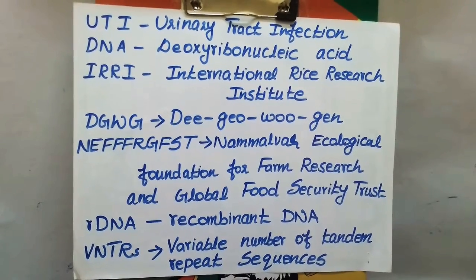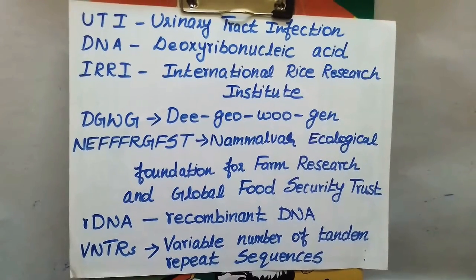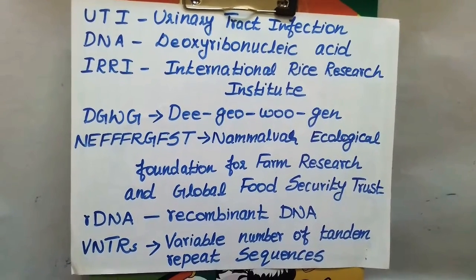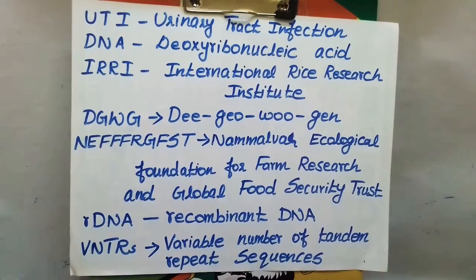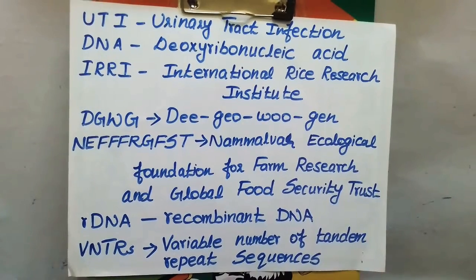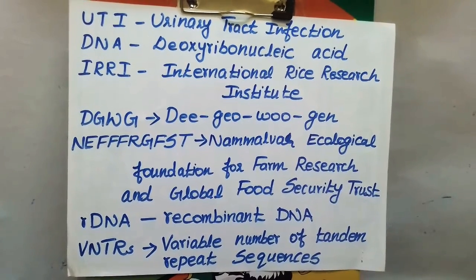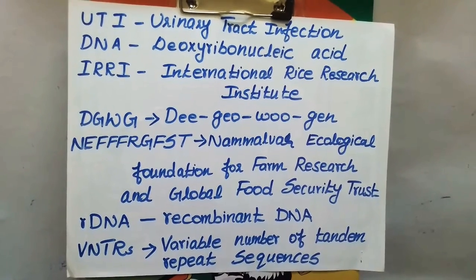R DNA is Recombinant DNA. VNTR is Variable Number of Tandem Repeat Sequences.